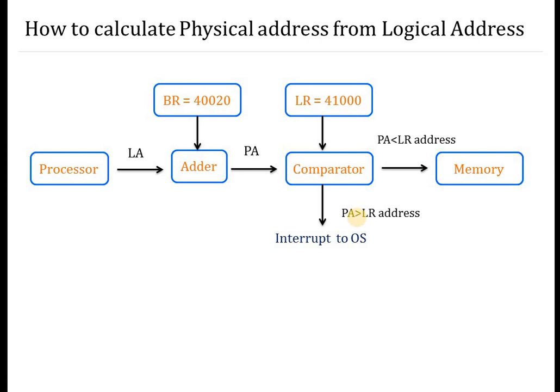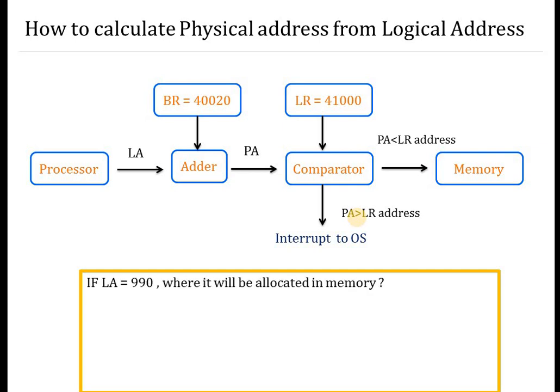So chaliye ab hum ek example dekhte hain. First of all, if LA equal to 990, so LA kya hai? Logical address. You have to remember it or probably if possible you just note down - LA is logical address, PA physical address, BR base register, LR limit register. So where it will be allocated in the memory? For example, yeh jo processor hai wo logical address generate karta hai. Usne logical address kya generate kiya? 990. Toh ab hamein is hisaab se calculate karni hai.